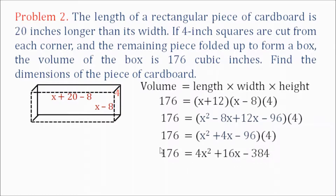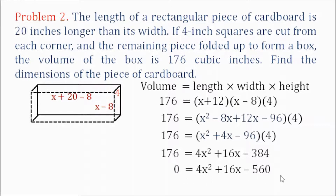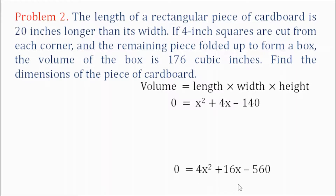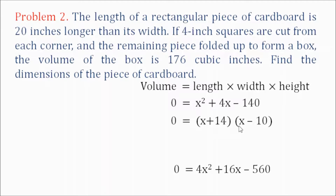We make one side equal to 0 by subtracting 176 from both sides, giving 0 equals 4x squared plus 16x minus 560. We can solve this quadratic equation by first reducing, since all terms are divisible by 4. Dividing all terms by 4, we get 0 equals x squared plus 4x minus 140. This quadratic equation can be solved by factoring since the trinomial is factorable. The factors of x squared plus 4x minus 140 are the quantity x plus 14 times the quantity x minus 10.